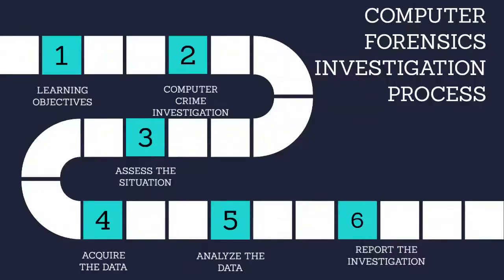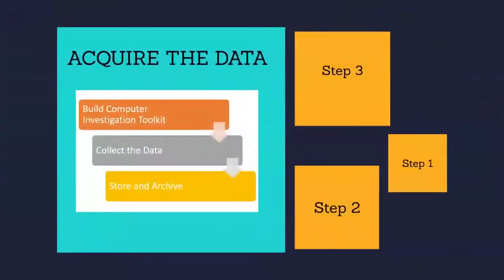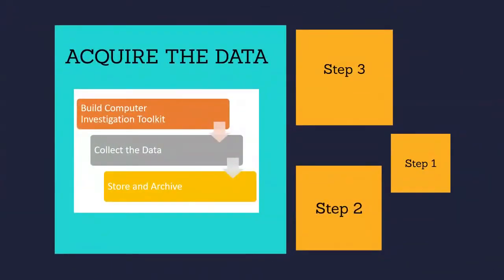The next phase of the computer investigation model is to acquire the data. This phase discusses how to acquire the data necessary for the investigation. Some computer investigation data is fragile, highly volatile, and can be easily modified or damaged. Therefore, you need to ensure that the data is collected and preserved correctly prior to analysis.